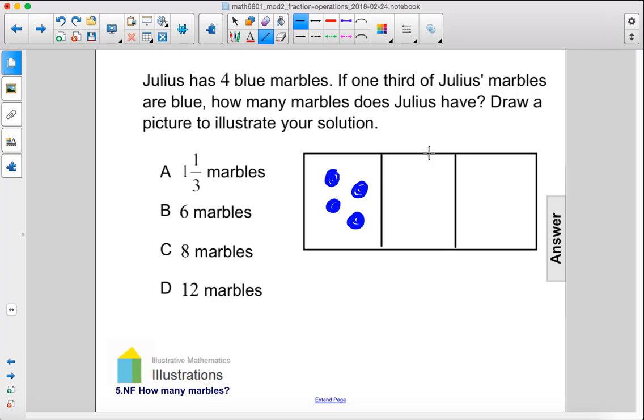So if the entire large rectangle is Julius's entire marble collection, then one-third of them, these four marbles, are going to be here.